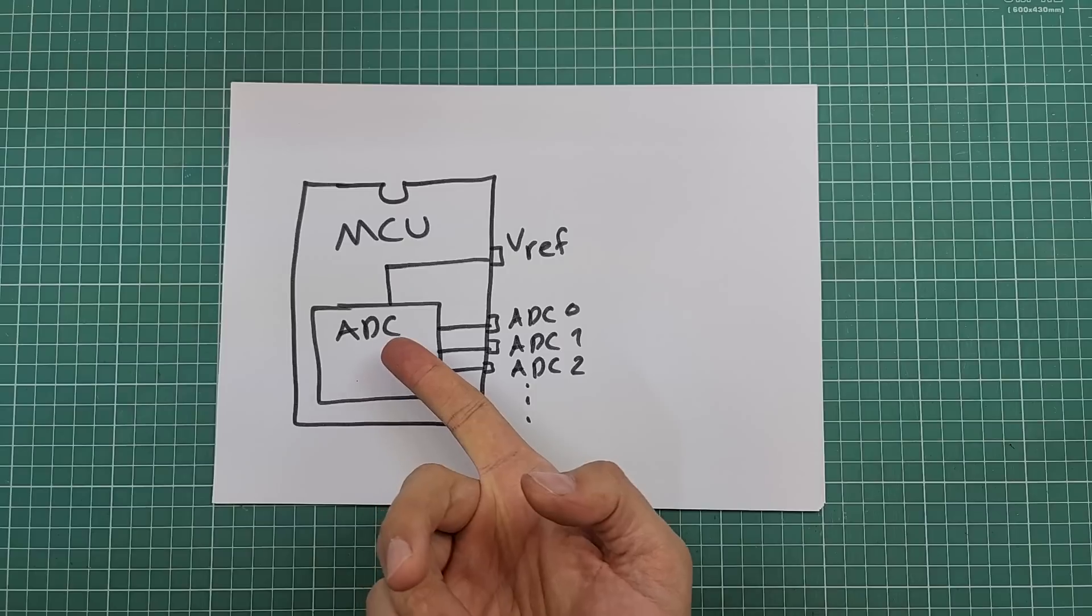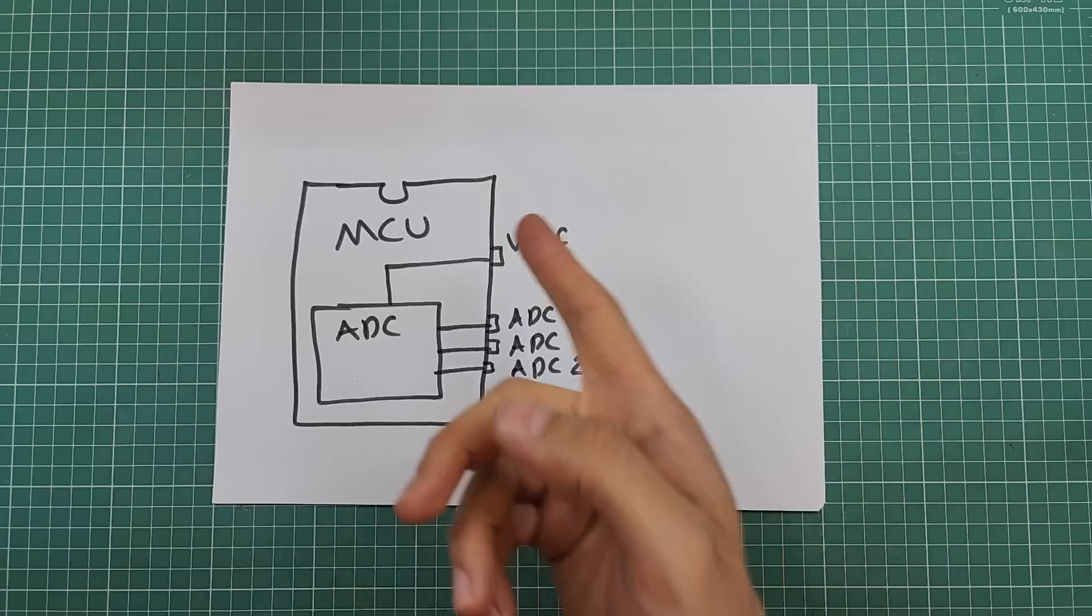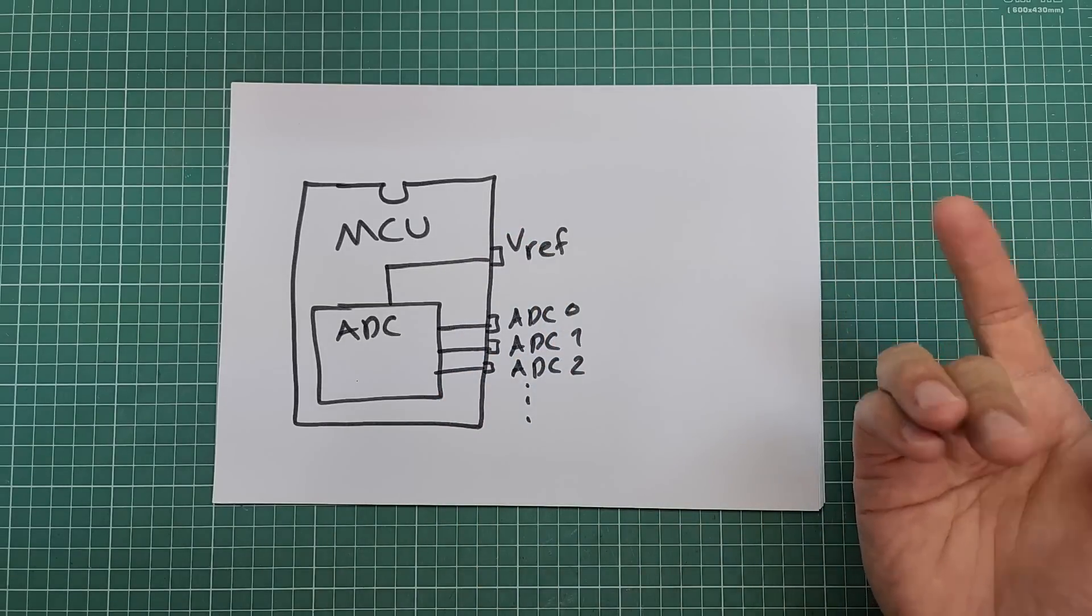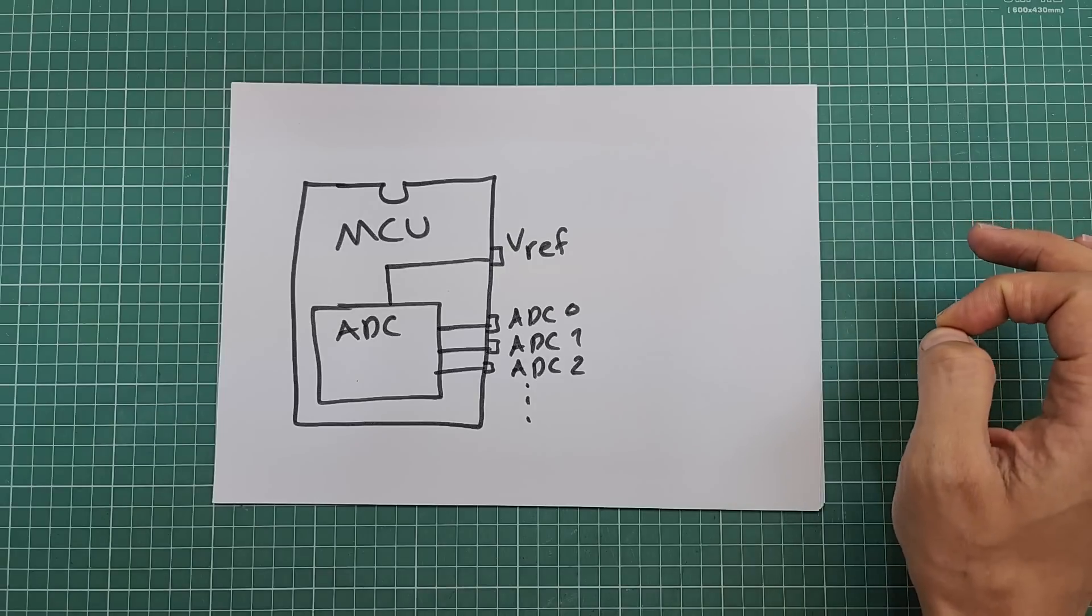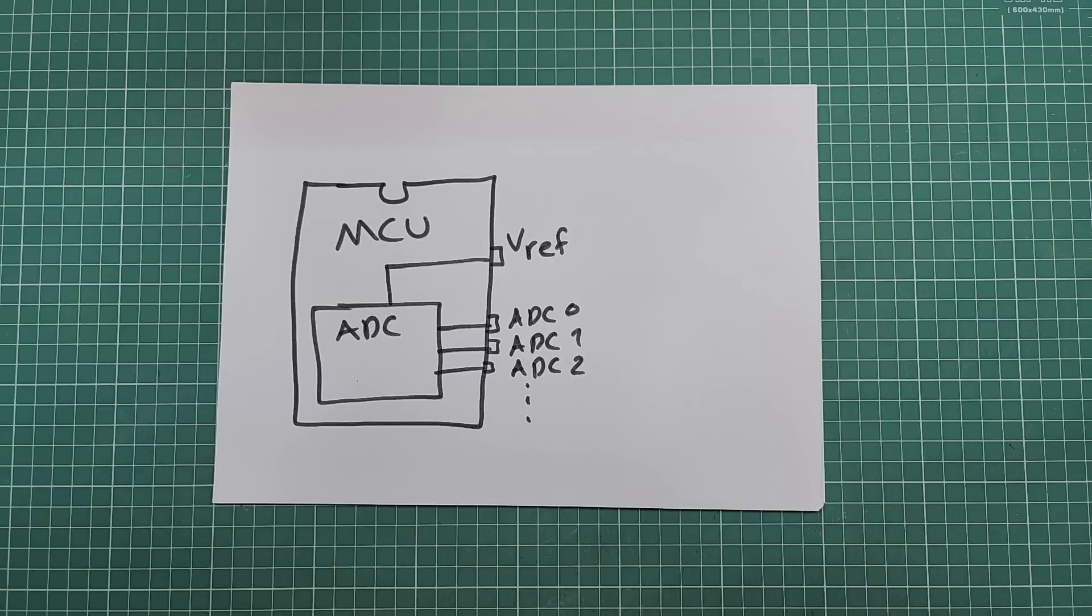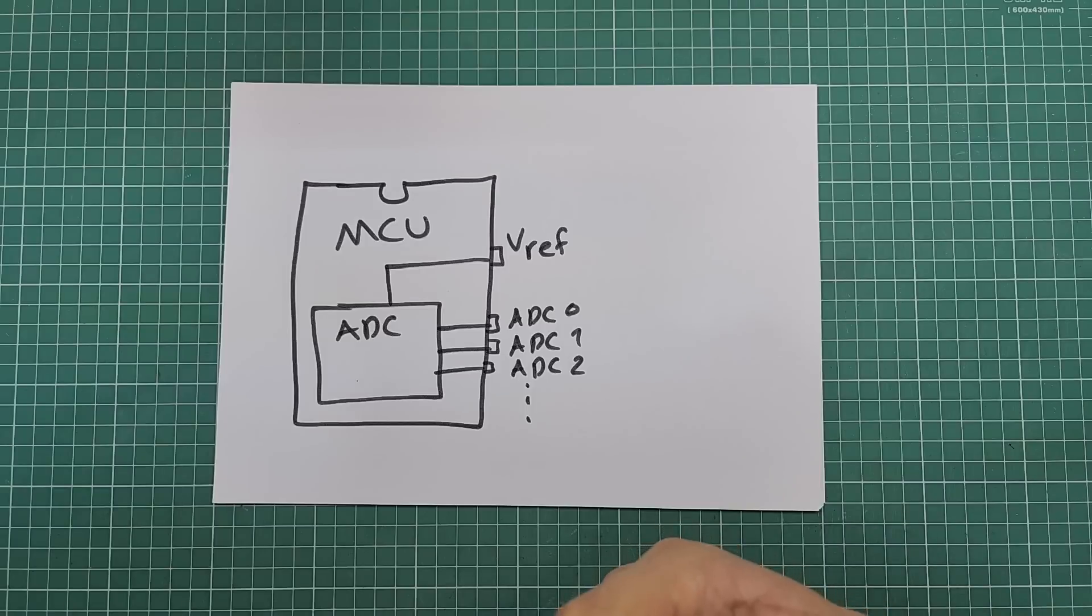Every ADC unit has a reference voltage. In some MCUs, there is a dedicated pin on the IC that lets us supply the reference voltage needed for the ADC unit to convert the analog voltage to digital numbers. I prefer not to delve into the specifics, but suffice it to say that this reference voltage is utilized in calculating the digital value. Essentially, the ADC compares the sensor voltage to the reference voltage and calculates the digital value proportionally.